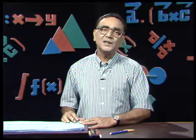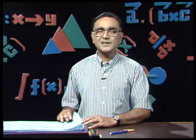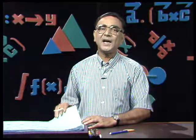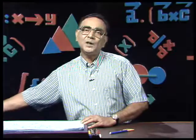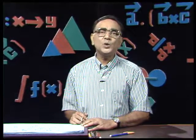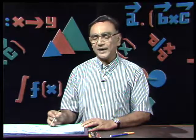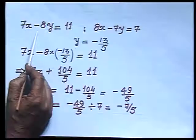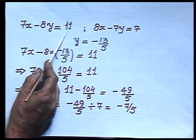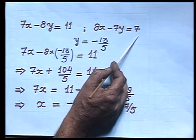So I converted both equations into x as a subject and from there calculated the value of y. Now the question arises: how to get the value of x? The system was 7x minus 8y equals 11 and 8x minus 7y equals 7, and we have already obtained y equals minus 13/5.